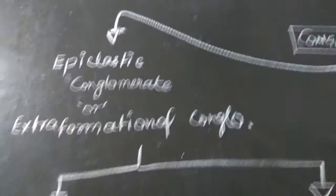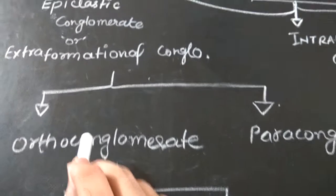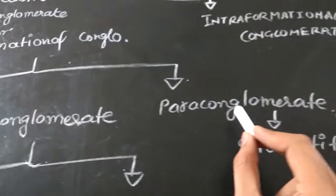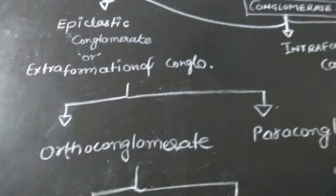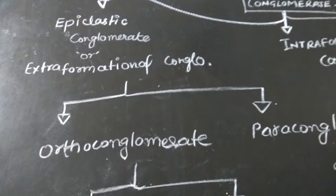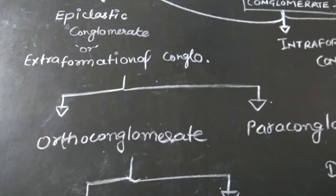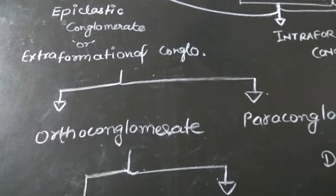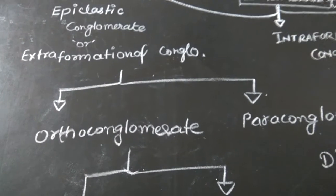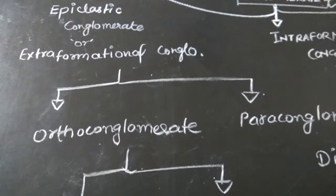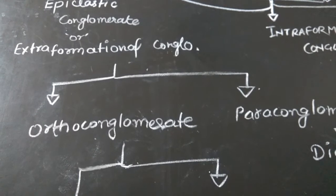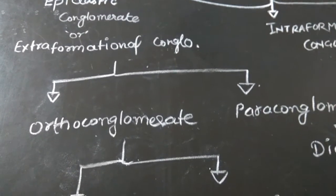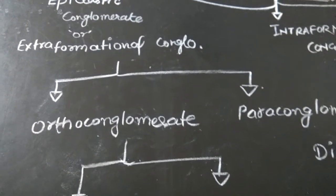Under the epiclastic or extraformational conglomerate, there are two types: orthoconglomerate and paraconglomerate. Orthoconglomerate has a matrix content of less than 15 percent, with detrital grains closely packed. Most importantly, it has very good sphericity and roundness, and it indicates a stable tectonic setting.